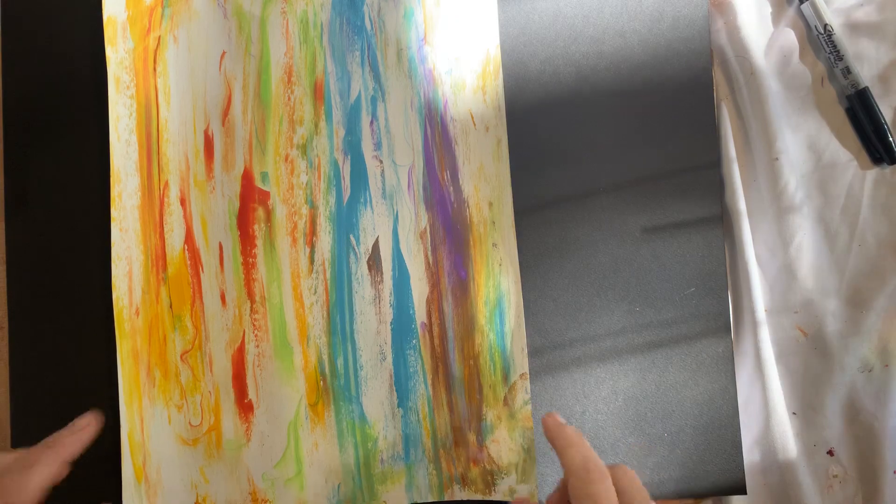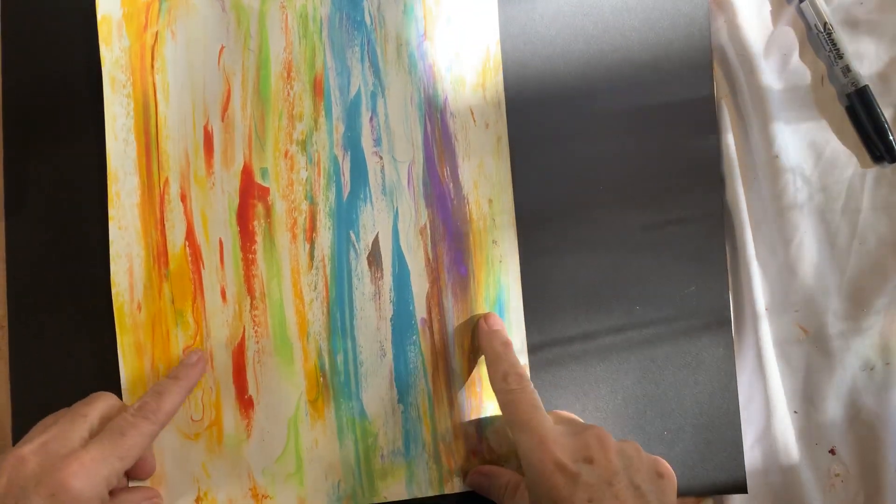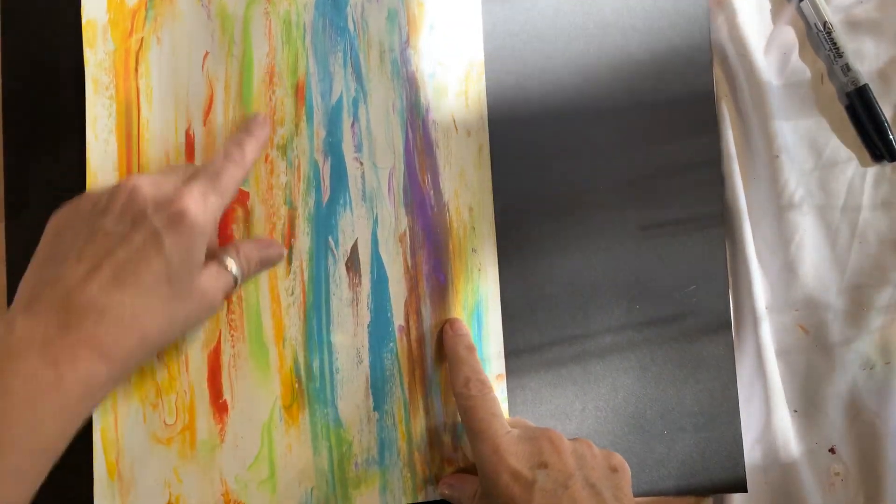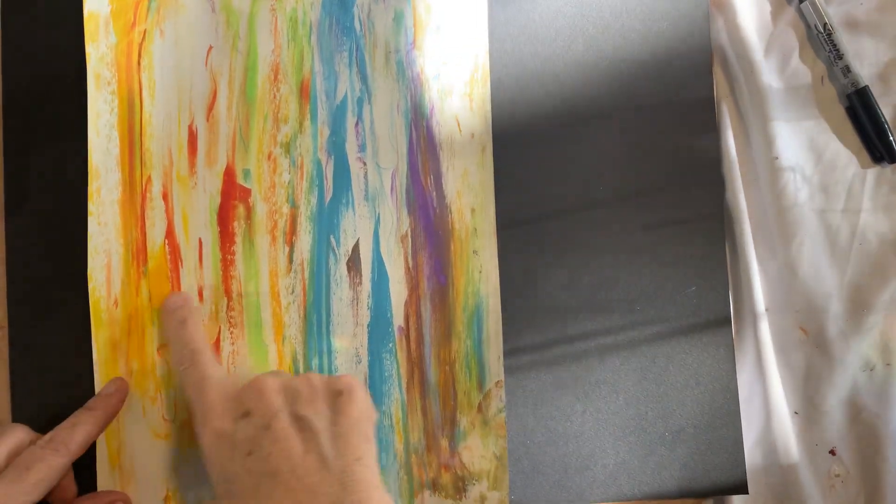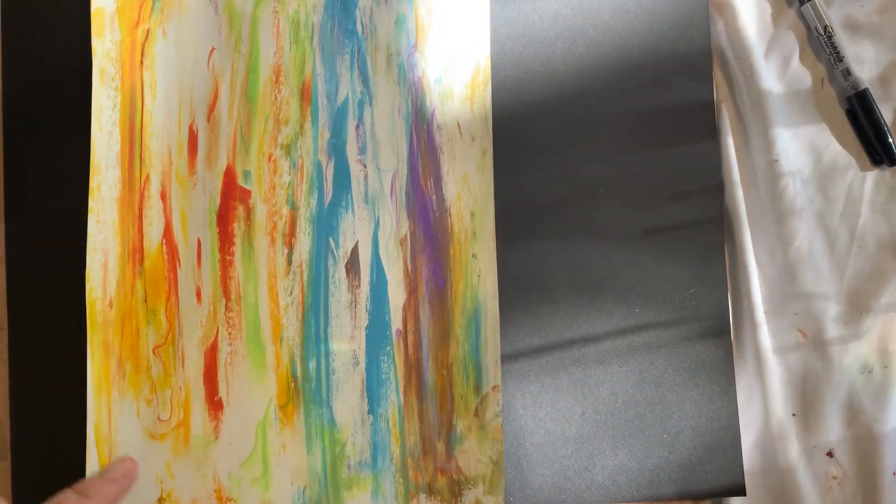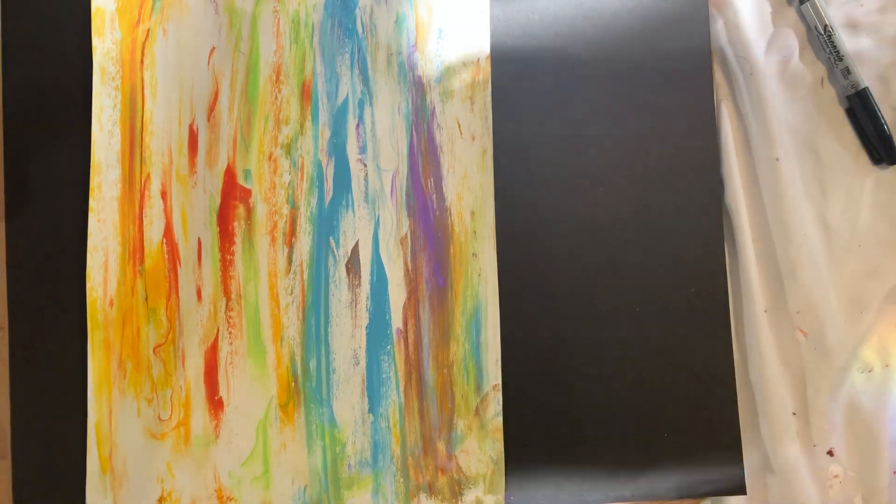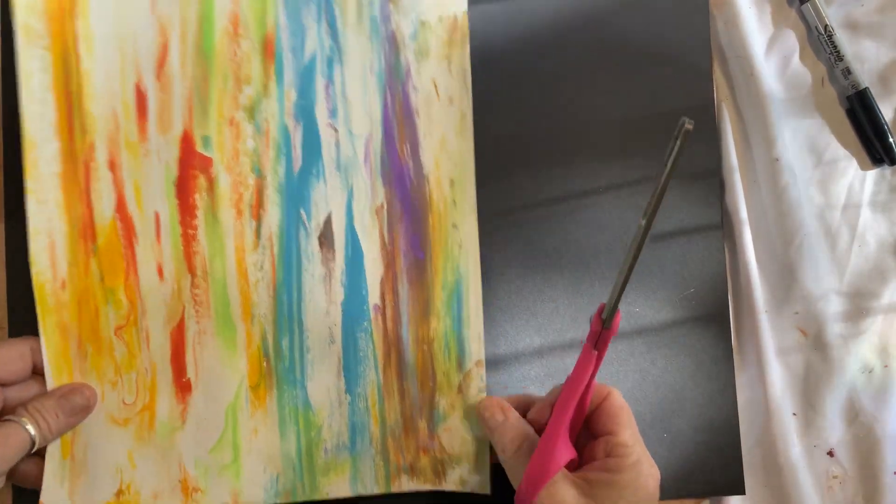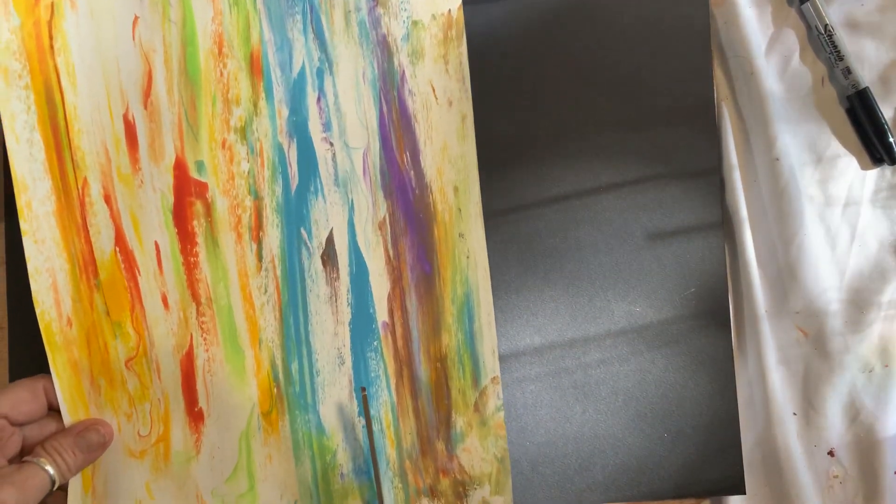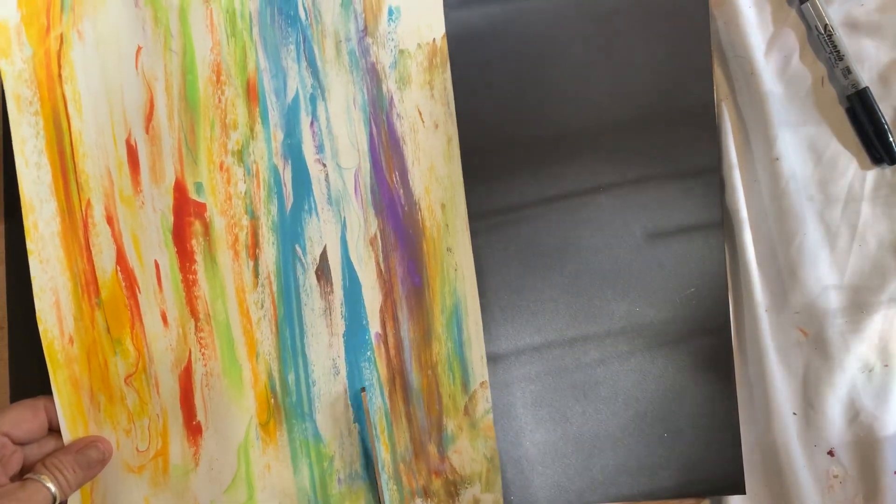So what I'm going to do now is I'm actually going to decide where do I want my trees to be. I'm going to make three trees out of this. I like the different designs, so I'm going to go ahead and just cut my paper. I'm going to cut it so that I can have three different trees.